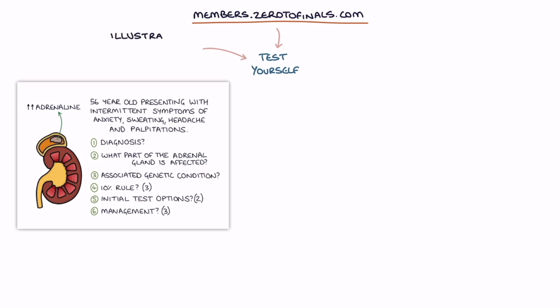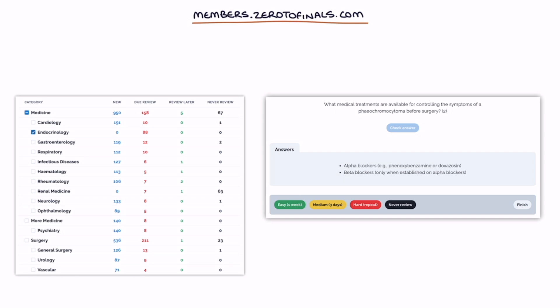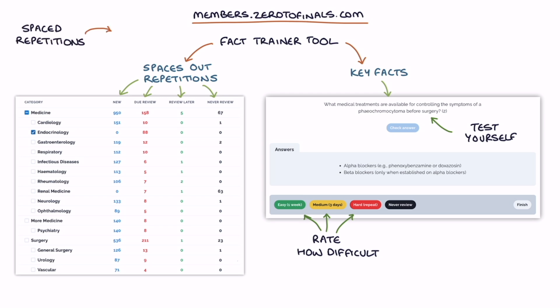Now head over to members.zerotofinals.com to test yourself on how much you understood and remembered from this video. The members site contains illustrated flashcards, multiple choice questions, and short answer questions designed to perfectly complement the Zero to Finals resources. It also features an Anki-like fact trainer tool which you can use to train your knowledge on the key facts you need for your medical exams. You test yourself on the fact, then rate how difficult you found that fact. The site then spaces out your repetitions and tells you when you're due to review it again. Going over the facts with spaced repetitions helps ensure they stay in your long-term memory.